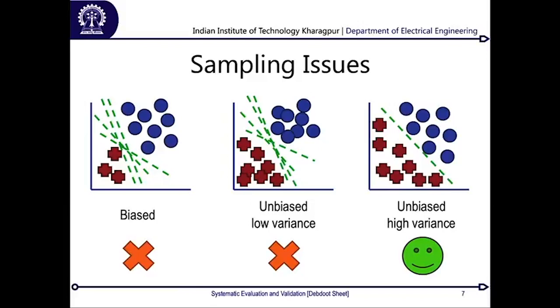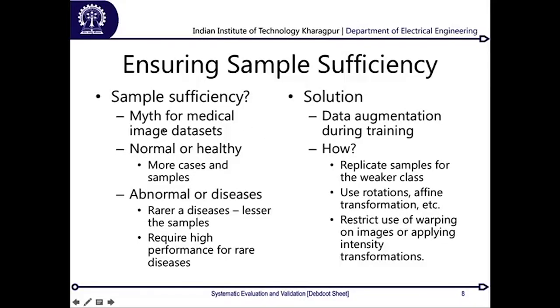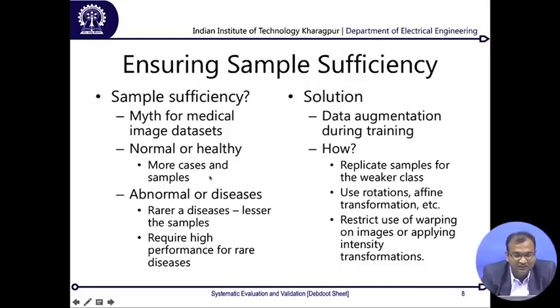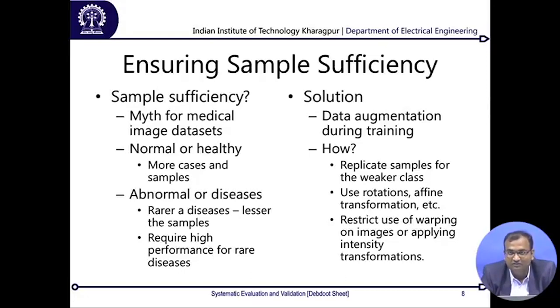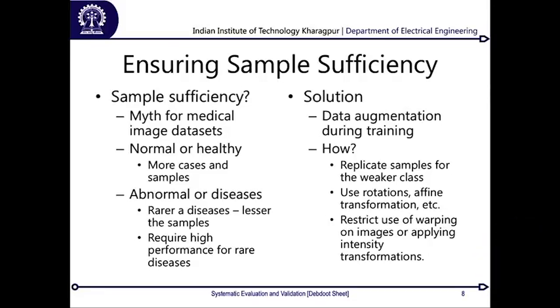However, sample sufficiency for medical images is actually a myth - a serious myth. You will have more cases for normal or benign conditions, and for abnormal or rare diseases the number of samples decreases, yet you always need the highest performance margin precisely for those rare diseases. The solution is data augmentation, a standard technique used in computer vision. In computer vision with natural scenes this is simpler, but for medical imaging you need to be very cautious about how you augment.